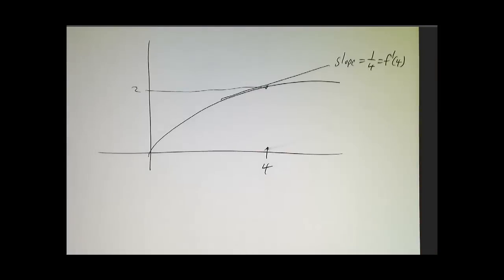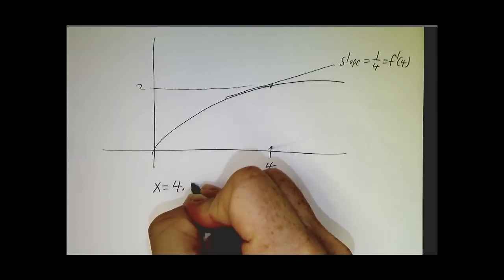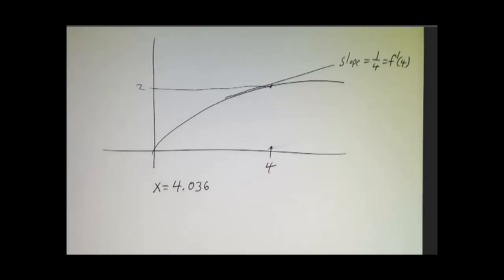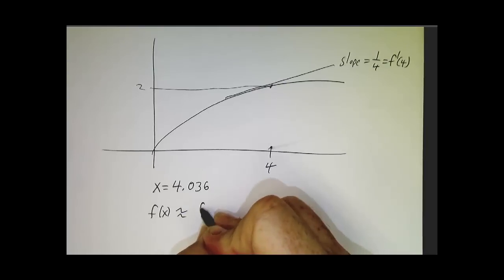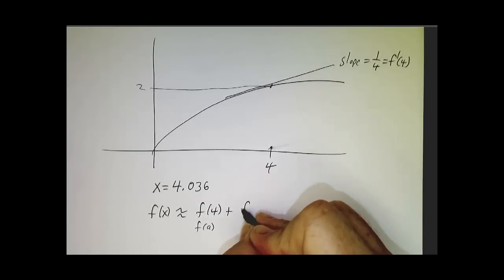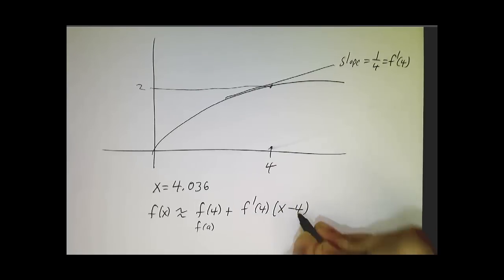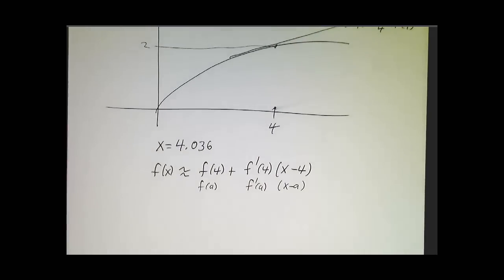So our approximation says we want to understand what's happening at x equals 4.036. And our approximation says that f is approximately f of four, that's f of a, plus f prime of four times x minus four. So that's f prime of a times x minus a.